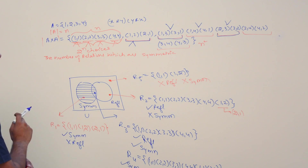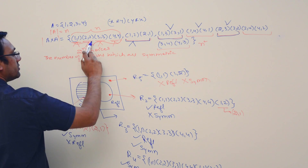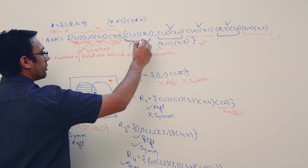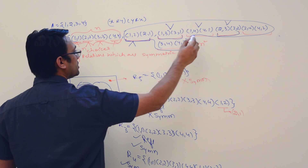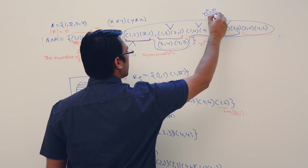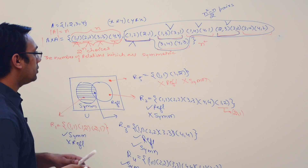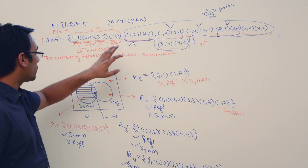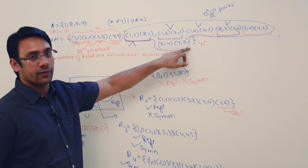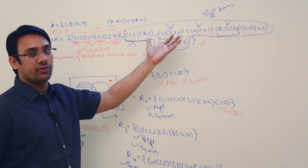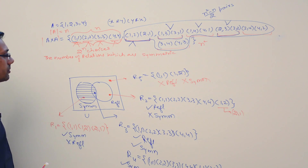So how many such pairs are there? The total number of elements is n squared. Out of these, n elements are the diagonal elements. The remaining elements are n squared minus n, but since we group them into pairs, we have (n squared minus n) divided by 2 pairs.